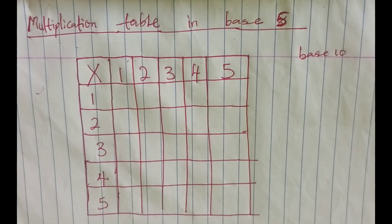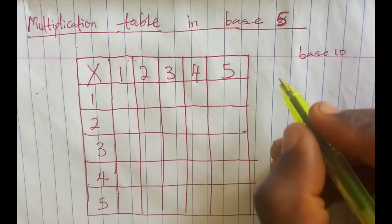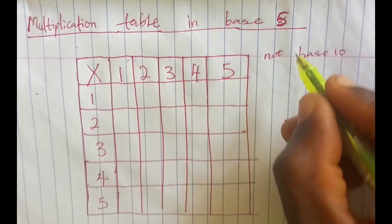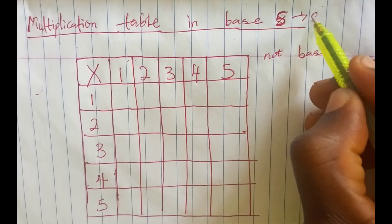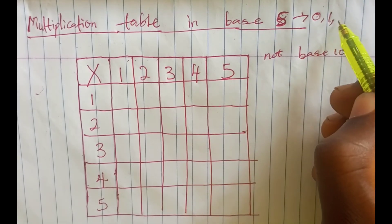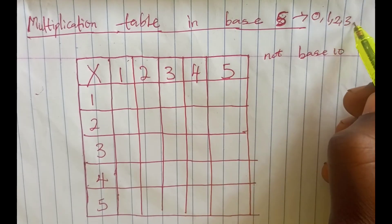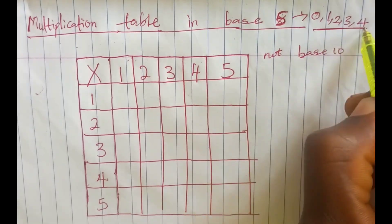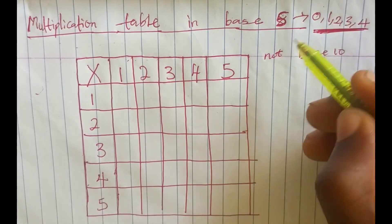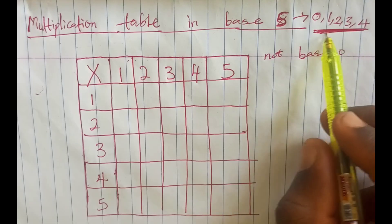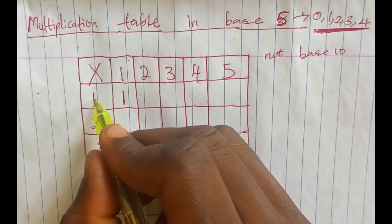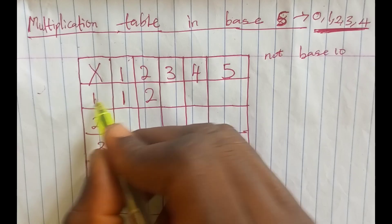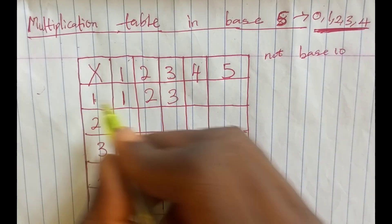Today let's look at the multiplication table in base 5 — not base 10. The numbers in base 5 are 0, 1, 2, 3, and 4, so all the answers in this table will only contain these digits. For example, 1 times 1 is 1, 1 times 2 is 2, 1 times 3 is 3, 1 times 4 is 4.